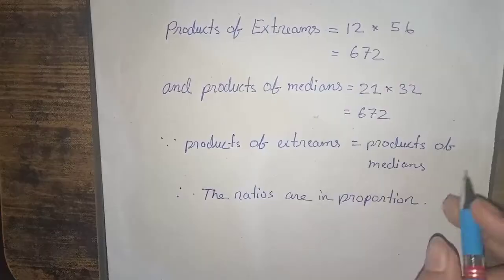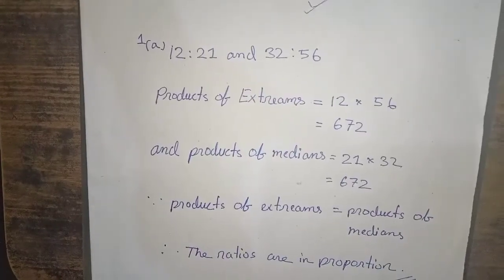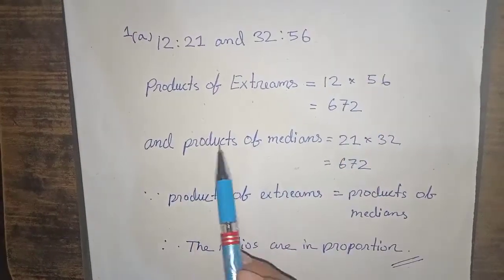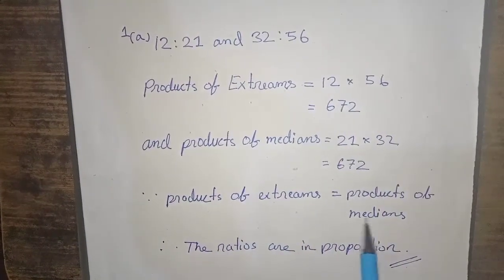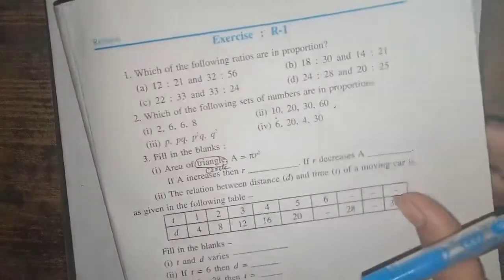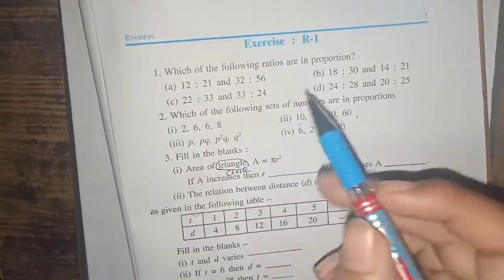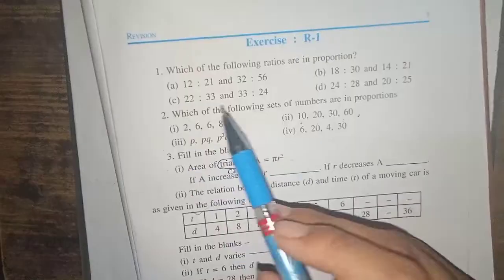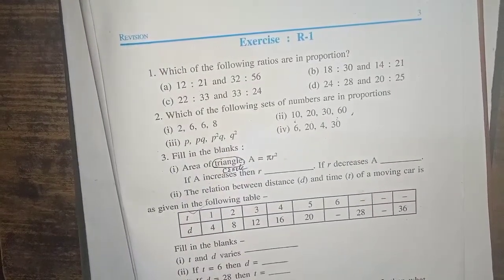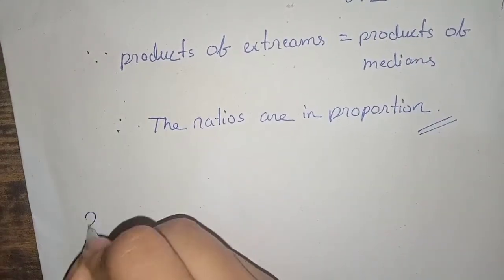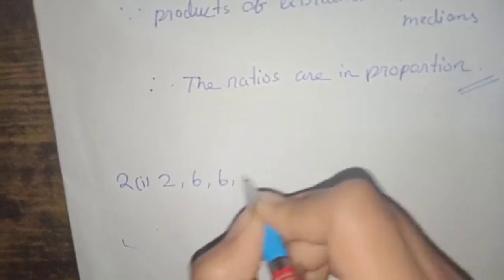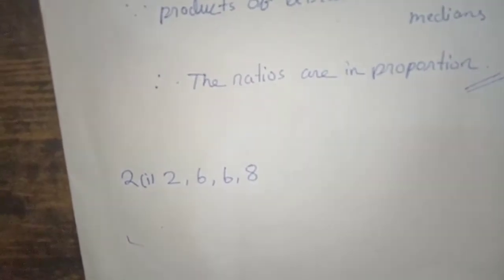The product of extremes will be compared and found equal to the product of medians. Using the same method, the second set of numbers gives the result 2668. The ratios are in proportion.